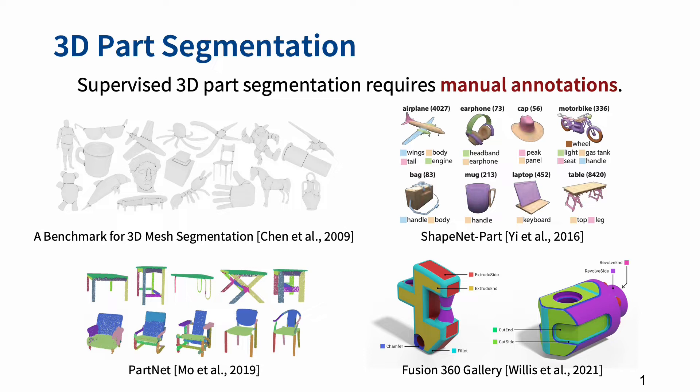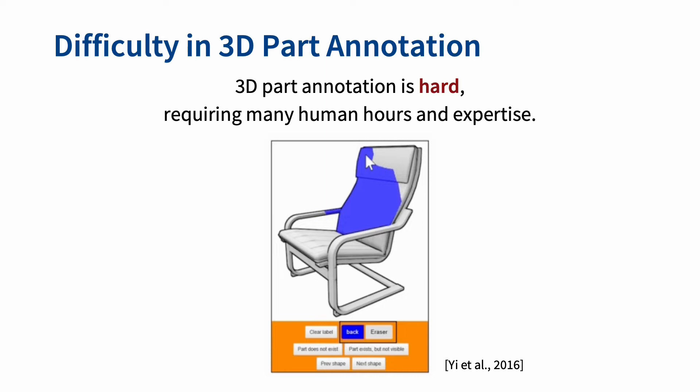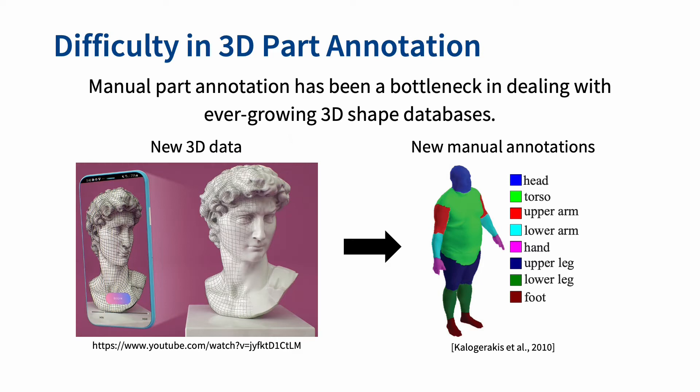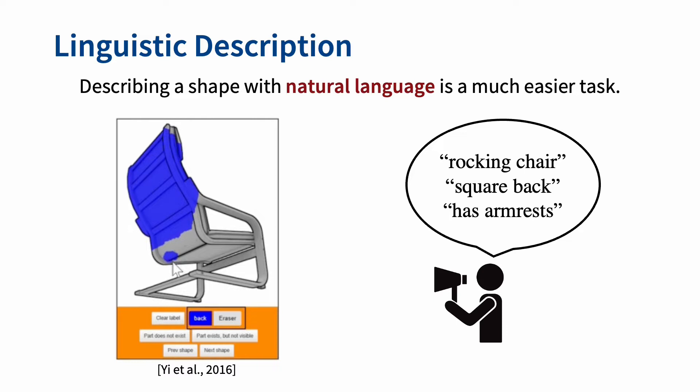3D part segmentation is an essential task in many applications. However, typical supervised methods require manual part annotations on 3D shapes. Annotating parts on 3D shapes is a non-trivial task that requires lots of human hours and expertise, and such a challenge in annotation has been a bottleneck in dealing with diverse shapes amid the massive increase in demand for parsing 3D shapes.